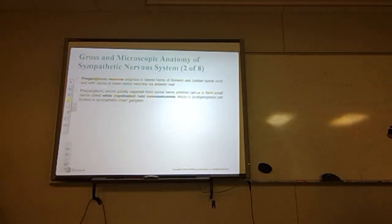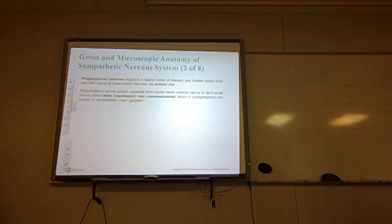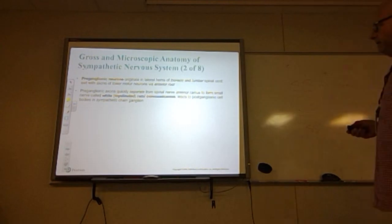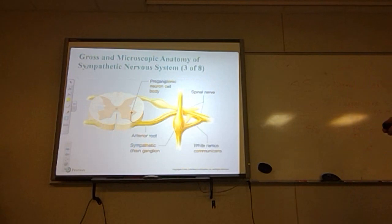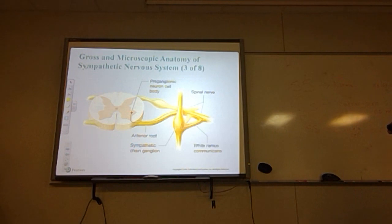Pre-ganglionic neurons exit with axons of lower motor neurons via the anterior root. The pre-ganglionic axons quickly separate from the spinal nerve's anterior ramus to form small nerves called white rami communicants — white because they are myelinated. These lead to the post-ganglionic cell bodies in the sympathetic chain ganglion.